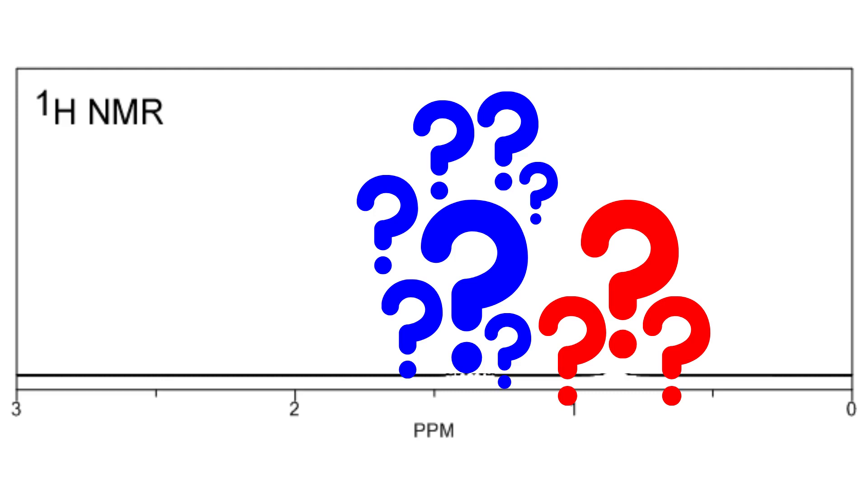So our prediction is two peaks, one appearing around 0.7 parts per million which splits into three and is three times as tall as the second group. The other peak will appear at around 1.3 parts per million, splitting into seven smaller peaks and being a third as tall as the first cluster of peaks.